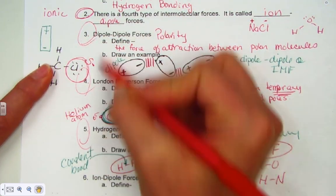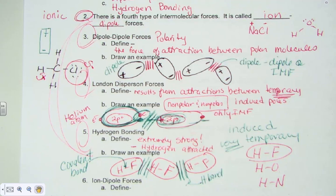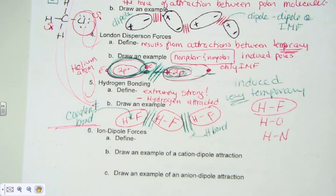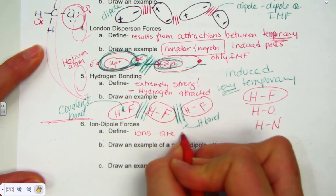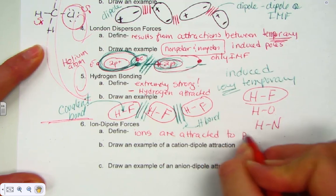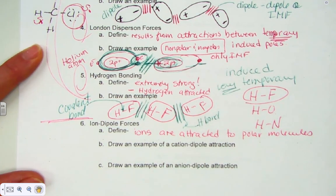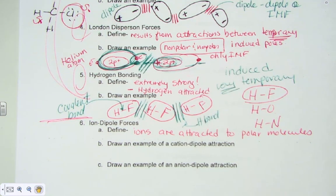So collectively, London dispersion, dipole-dipole, and hydrogen bonding exist between molecules — between molecular compounds — as Van der Waal forces. For the fourth force, ion-dipole, we look at ionic compounds (salts) dissolving into a polar solvent. A student defined it well: ions are attracted to polar molecules. Ions are charged atoms — positive or negative. Polar molecules are dipoles. Salts dissolving into water is an ion-dipole attraction.